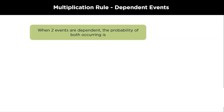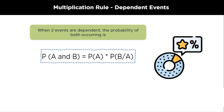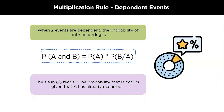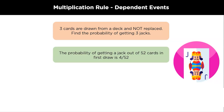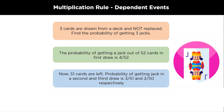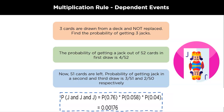There is a multiplication rule associated with dependent events. It says that when two events are dependent, the probability of both occurring is given by: P(A ∩ B) = P(A) × P(B|A). The slash reads: the probability that B occurs given that A has already occurred. Let's look at an example — three cards are drawn from a deck and are not replaced. What will be the probability of getting three jacks? The probability of getting a jack out of 52 cards in the first draw will be 4/52. After drawing the first card, there are 51 cards left. The probability of getting a jack in the second and third draws will be 3/51 and 2/50 respectively. So, according to the formula, the probability of getting three jacks will be (4/52) × (3/51) × (2/50), which comes out to be 0.00176.